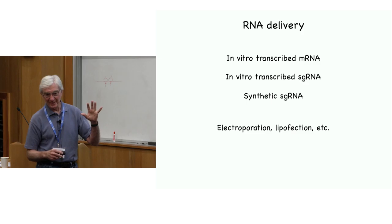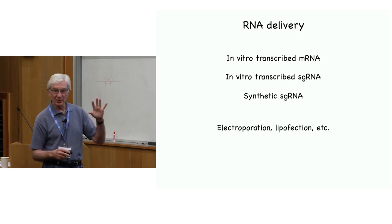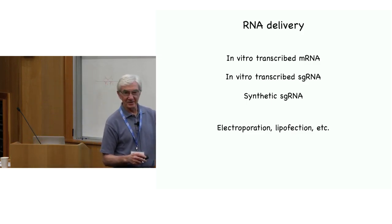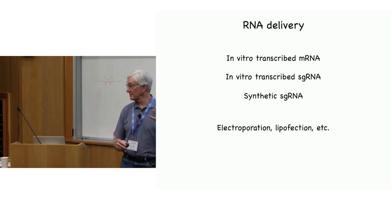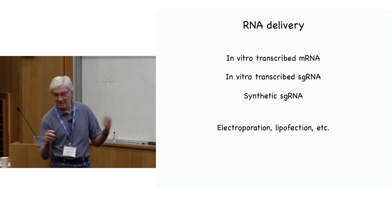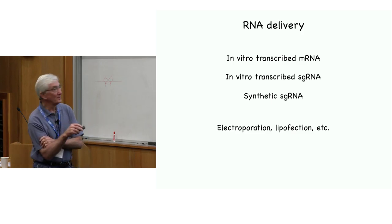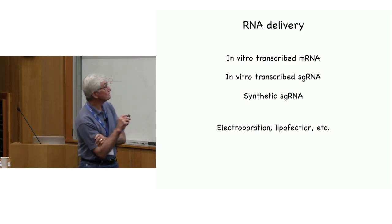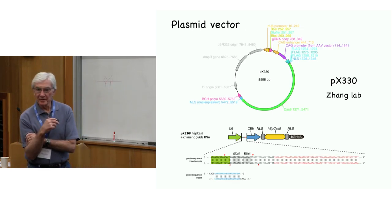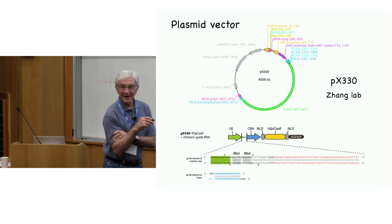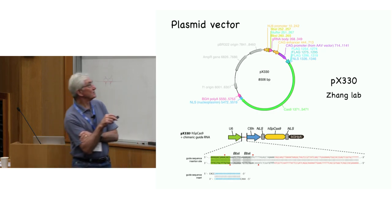These companies doing RNA and DNA synthesis are also looking at chemical modifications that improve efficacy, not just stability. There are lots of ways to get RNA into cultured cells. For DNA delivery, there are a variety of plasmids — this one from the Zhang lab has been widely used.